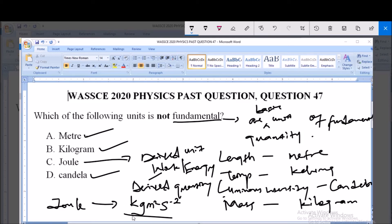And this is to tell you that Joule is derived from kilogram, the fundamental unit of mass, meter, the fundamental unit of length, and second, which is the fundamental unit of time. So therefore, Joule is the answer to this question because Joule is a derived unit.